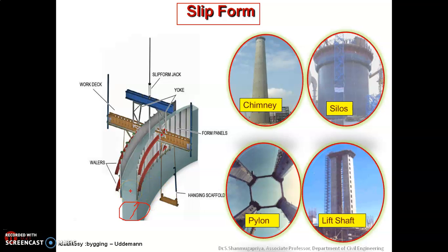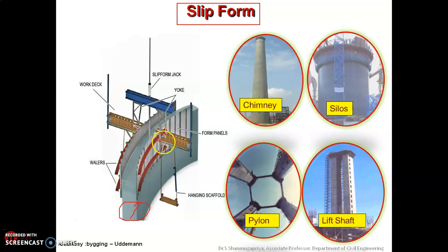The slip form technique differs from other forms in that form ties are not used. In the conventional method for building an RC wall, you tie reinforcement, place shutters, and use a tie rod between them to resist lateral concrete pressure. In slip form construction, there is no need for tie rods.